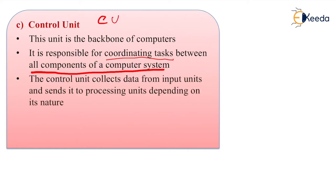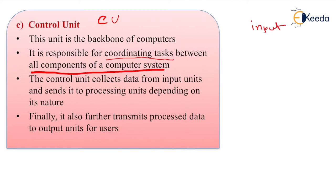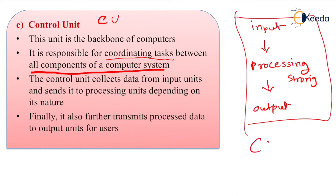The control unit collects the data from input units and send the data to processing units depending on its nature. Finally, it also further transmit the preceded data to the output units. That means the input of your data, then the processing of your data, then output of your data, as well as the storing of your data. This everything gets handled by the control unit.